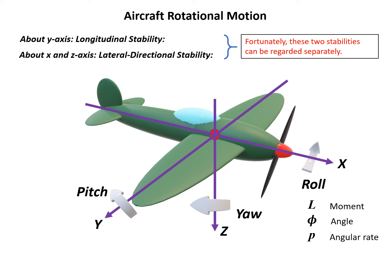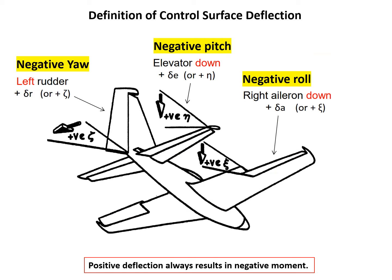For roll about the x-axis: the rolling moment is L, the rolling angle is φ (phi), and the rolling rate is p, which is angular velocity. For yaw: the yawing moment is N, and the yawing angle is ψ (psi). The pitching rate is q. The positive directions of x, y, z and also roll, yaw, and pitch all follow the right-hand system.